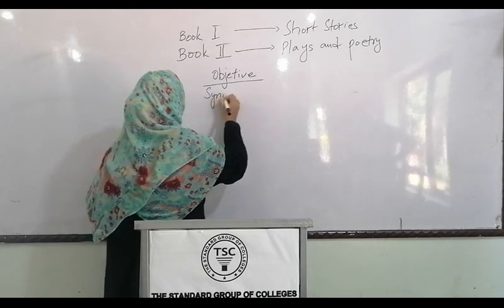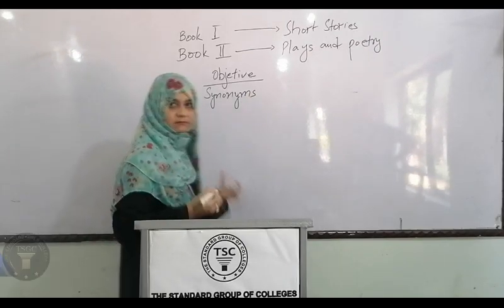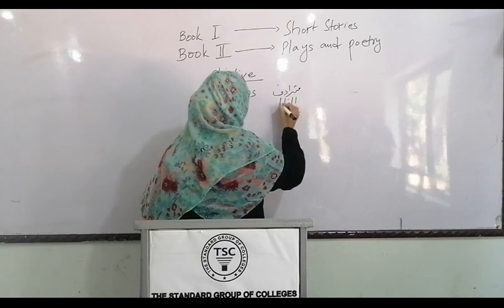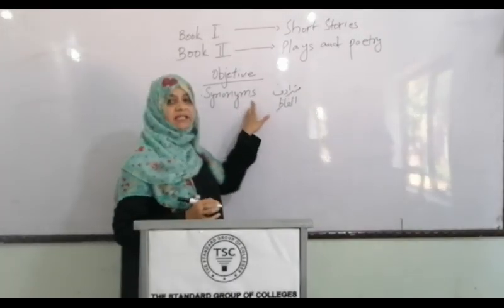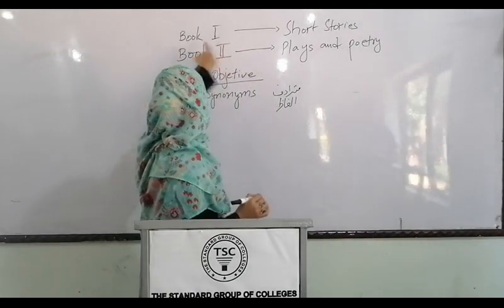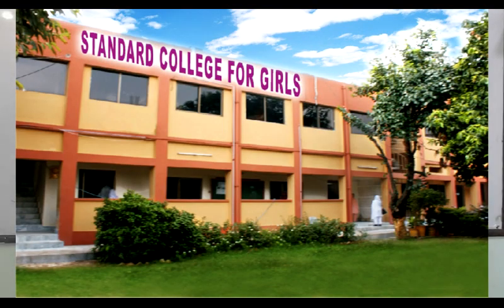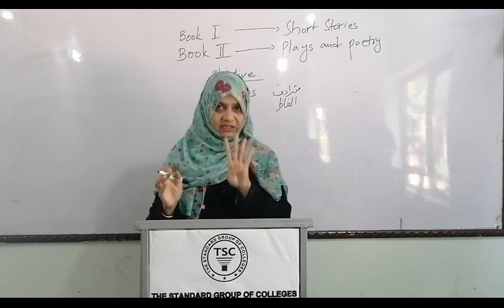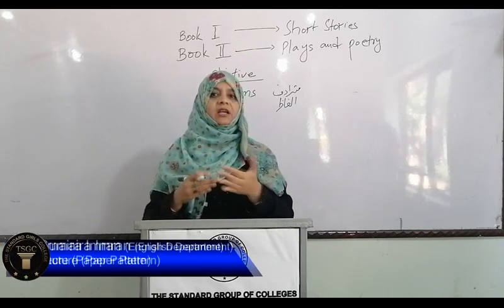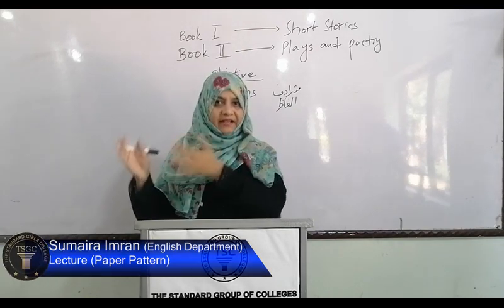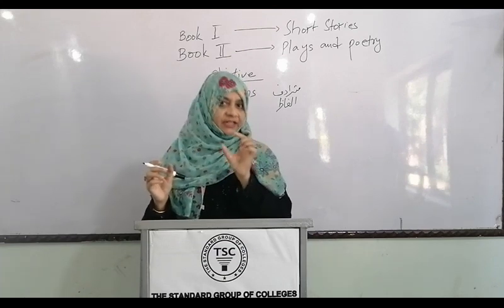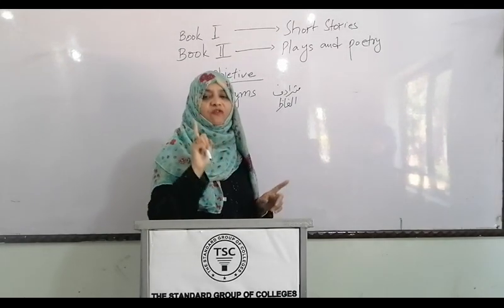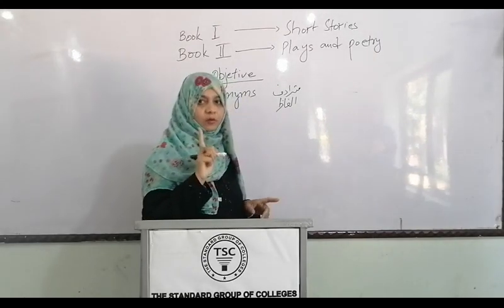The first question in the objective paper is synonyms — also called 'synodance.' This is where you are given a statement with one word underlined, and four options are provided. You must select the most appropriate synonym according to the context of the story, poem, or play. Synonyms are taken from short stories and use difficult words. Four options are given and you choose only one correct answer.